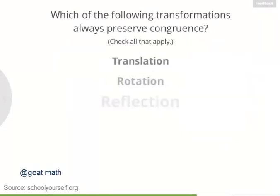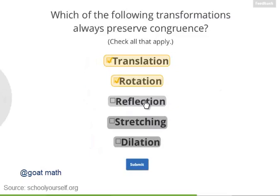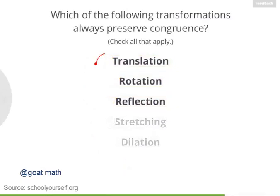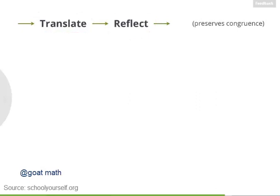So to recap, which transformations always preserve a shape's congruence? Translation, rotation, and reflection are the transformations that always preserve congruence. Now suppose you have a shape, and you first translate it, and then you reflect it. The resulting shape will still be congruent to the original, because translating it won't change the shape or size, and neither will reflecting it.